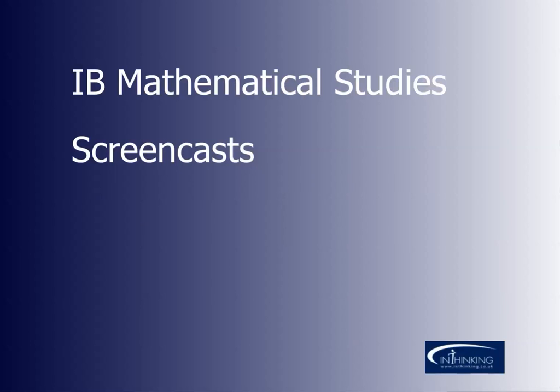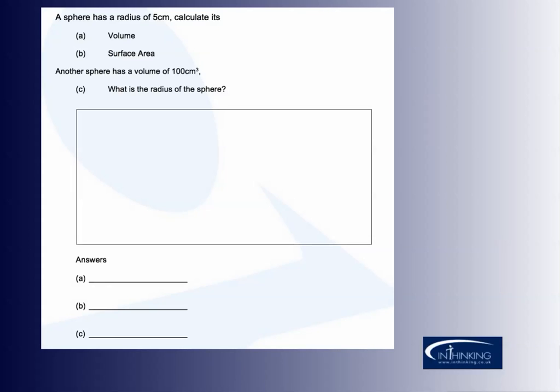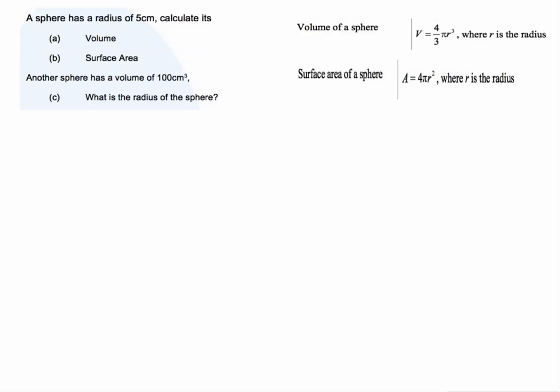This is a screencast to show a solution to the IB Math Studies IB style question. It's this question here about the radius and volume and surface area of spheres. A sphere has a radius of five centimeters. Calculate A, its volume and B, its surface area. Before we do anything else, we need to make sure that we find the relevant section of our formula booklets, which shows us the formulas for both of those properties.